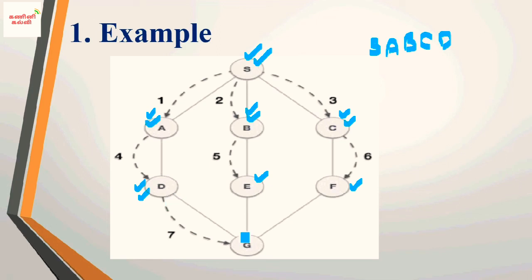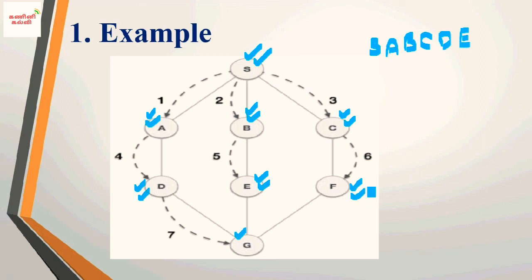D is added to the BFS order. The non-visited adjacent vertices of D include E and G. E is added to the queue. Next, E is deleted from the queue and added to the BFS order. E's non-visited adjacent vertex — G is already visited. Then F is deleted and added to the BFS order. F's adjacent vertices C and G are already visited. G is added to the BFS order.